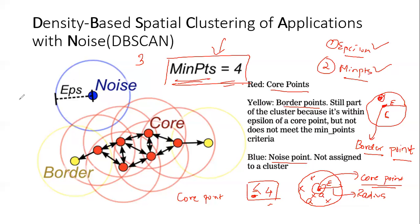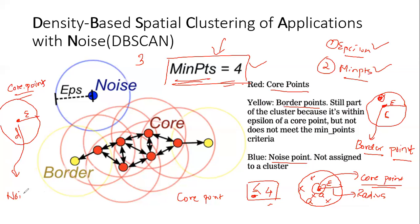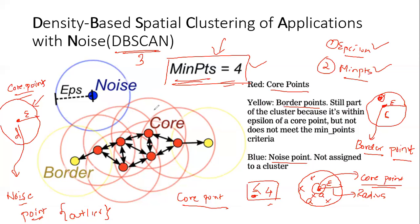Now suppose I have point B — I take the epsilon radius and create my boundary. What if neither condition is satisfied? If I don't have the minimum number of points, and I don't have any core points inside, then this point becomes a noise point. A noise point is basically an outlier. DB scan handles outliers well — it just skips that noise point and never treats it as a separate cluster.